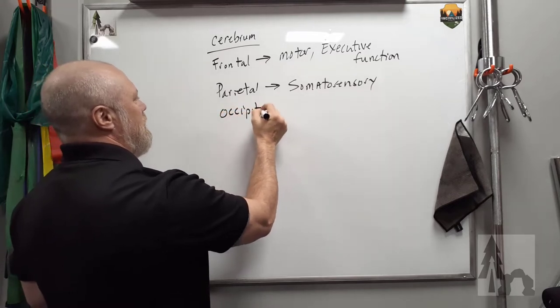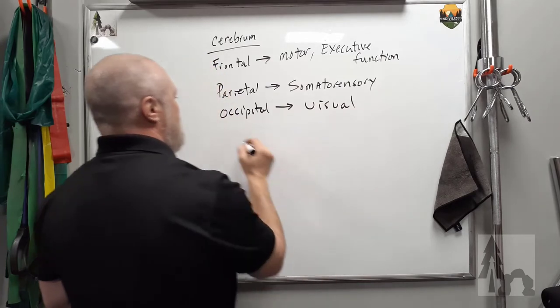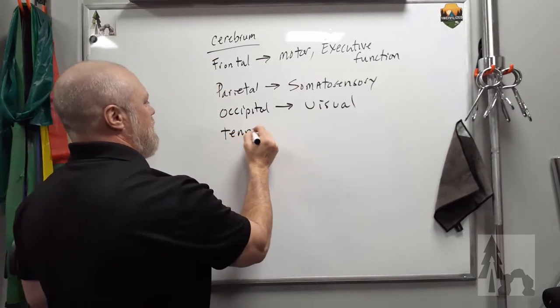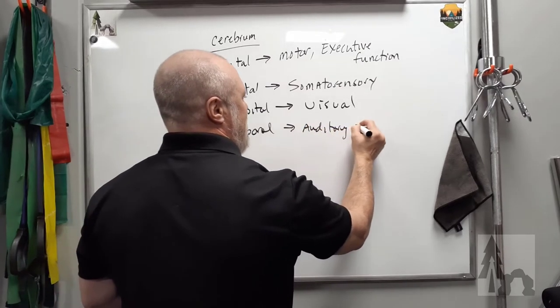Occipital lobe, that's your visual cortex, that's where you see things.